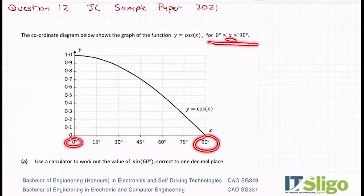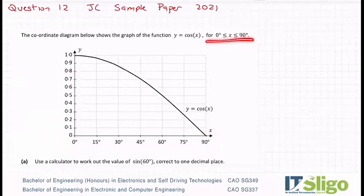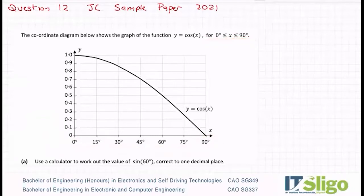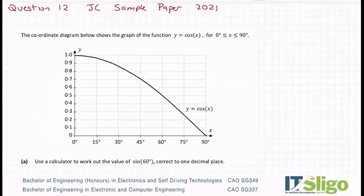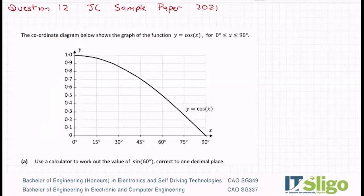The x-axis goes between 0 to 90 — that's called your domain in the functions chapter. And then this is called your range, so 0 to 1. It's the graph of y is equal to cos x — a chapter that seems to bridge coordinate geometry, functions, and a little bit of trig.